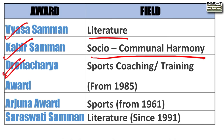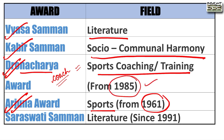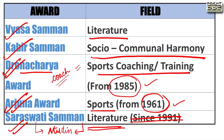Dronacharya Award is easy to remember — Dronacharya was a coach in mythology, so this award is for sports coaching or training. Arjuna Award is sports-related and began in 1961. Saraswati Samman is literature-related — associated with studies and learning.